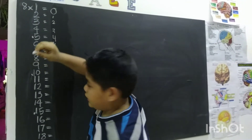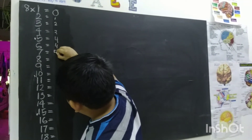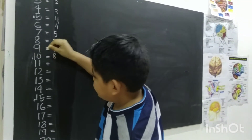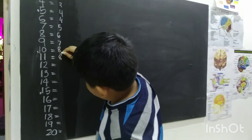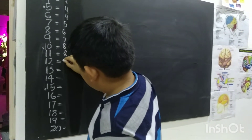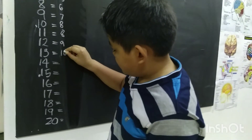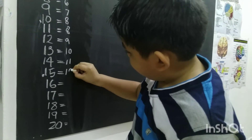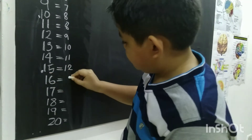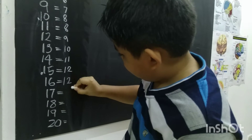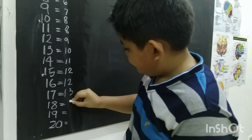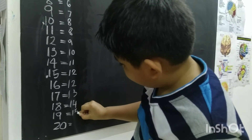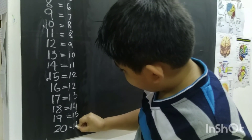Now let's continue counting. Five, six, seven, eight. We reached the mark, so we have to repeat. Another eight. Nine, ten, eleven, twelve. Repeat again — twelve. Thirteen, fourteen, fifteen. And finally, sixteen.